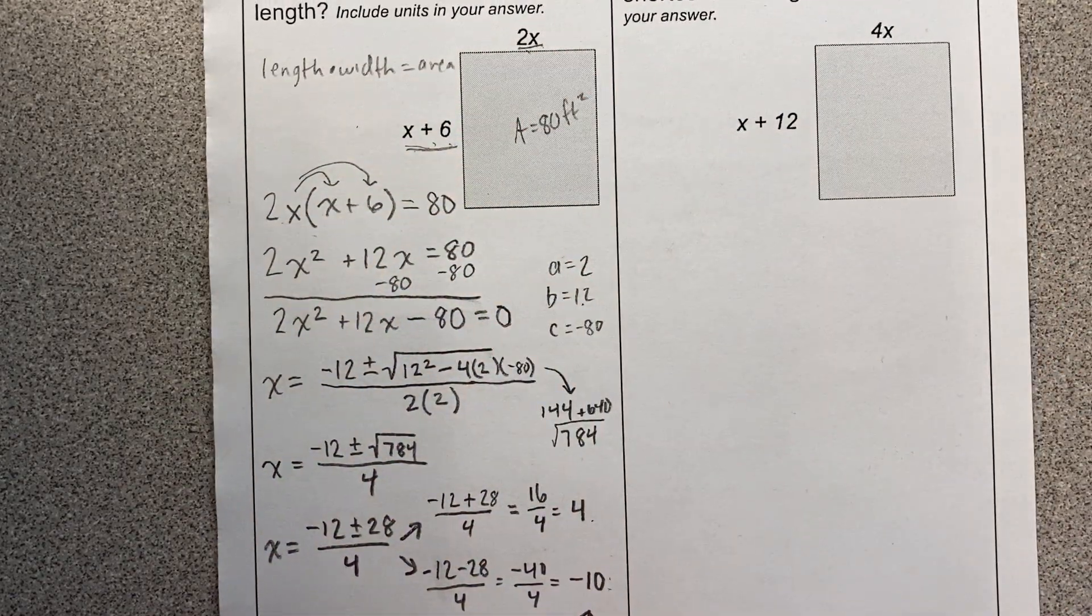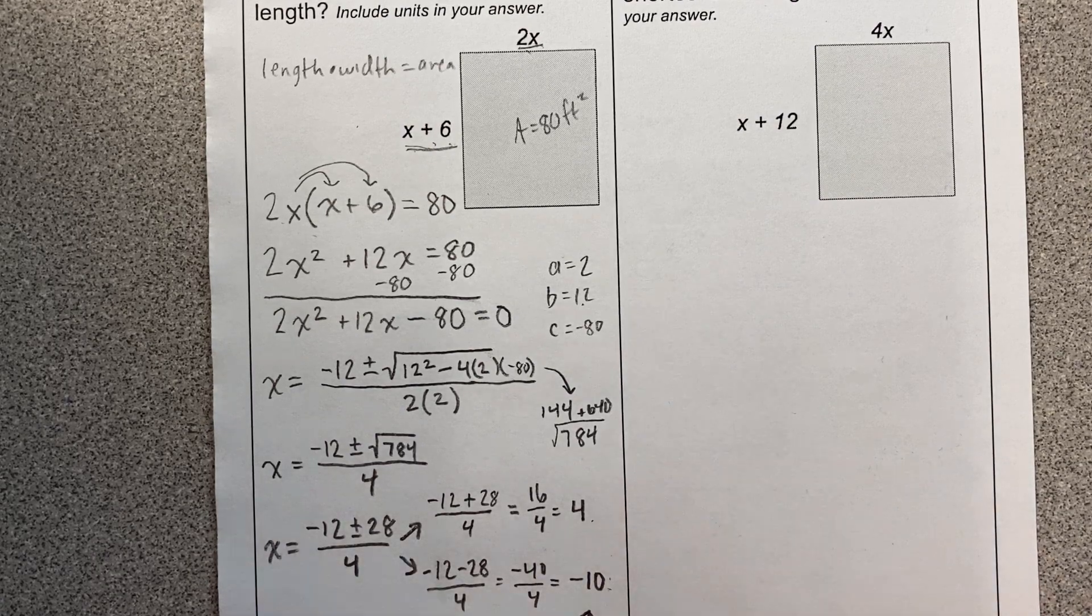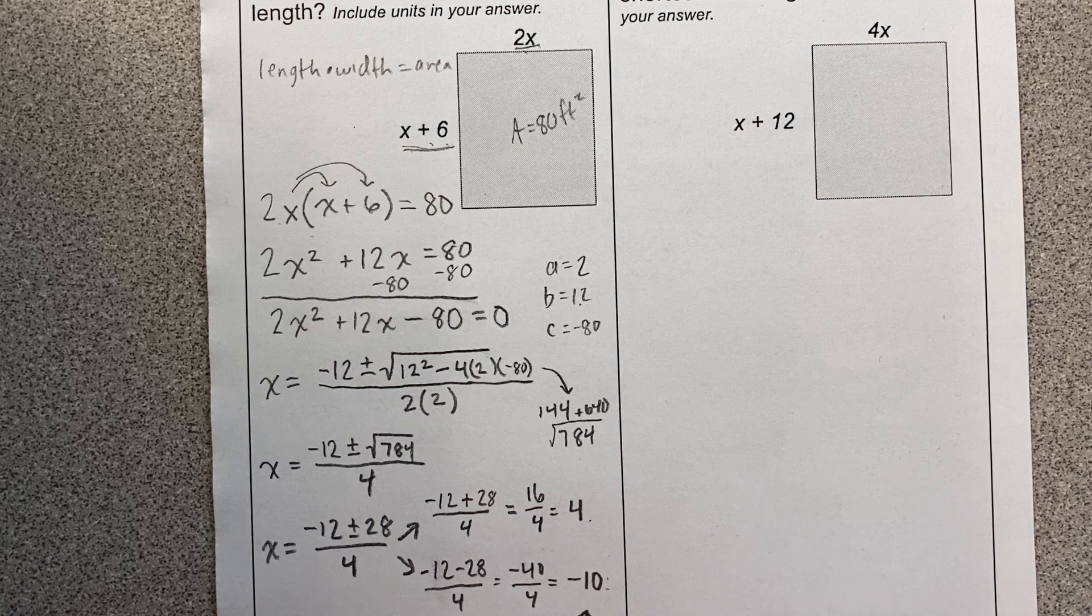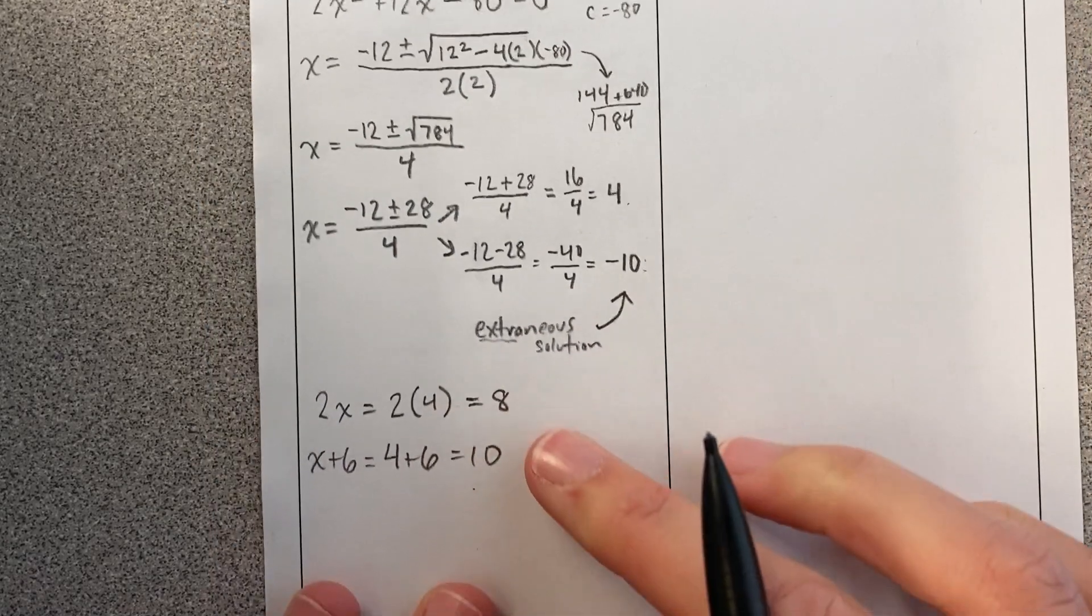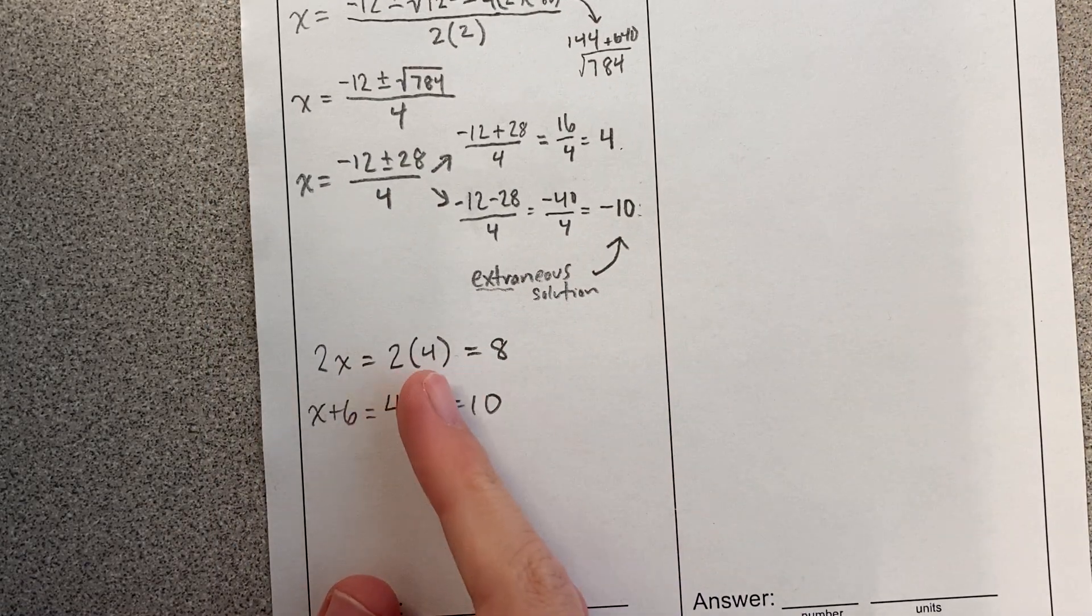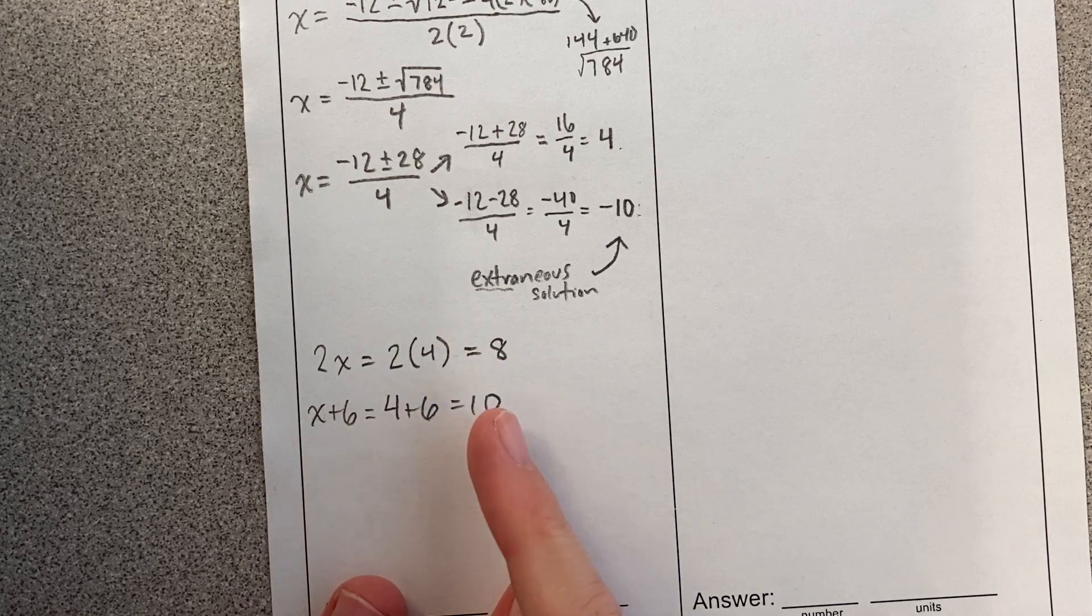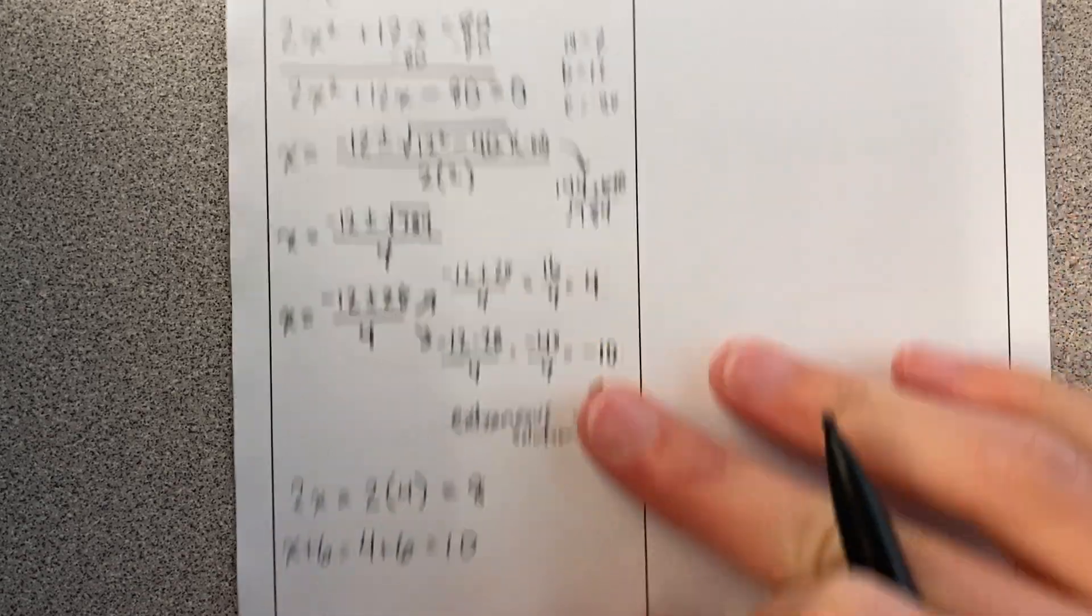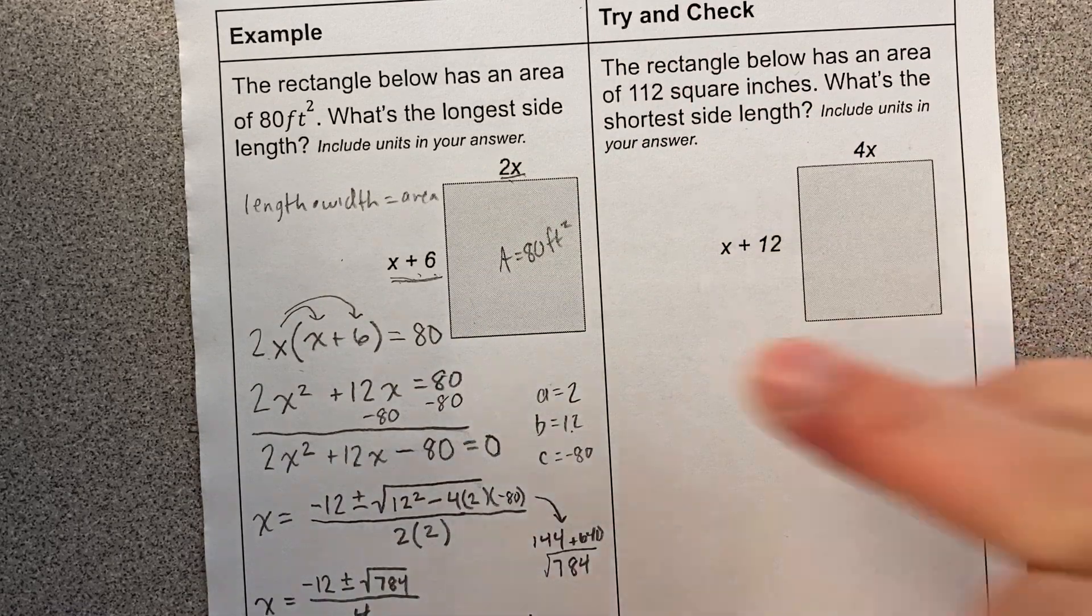So my side length of 2x equals 2 times 4, that equals 8, right? And then my side of x plus 6, that equals 4 plus 6, that equals 10. And let's just check, because x is 4, and that equals 8. And x plus 6 equals 4 plus 6, and that equals 10. And let's just make sure that makes sense, right? Like if this is 8 and 10, this is 8 by 10. Does that make an area of 80? Sure does. Love it. Our answers are correct.